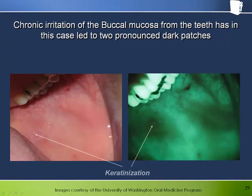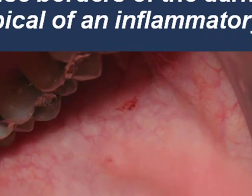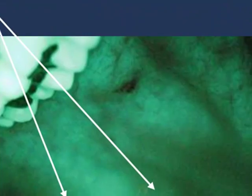Chronic irritation of the buccal mucosa from the teeth has in this case led to two pronounced dark patches rather than a line — still, the principle is the same. Notice the diffuse borders of the dark inflamed areas under Velscope. Also, vessel damage with extravasated blood associated with trauma has a corresponding very dark presentation under Velscope, which is entirely to be expected.